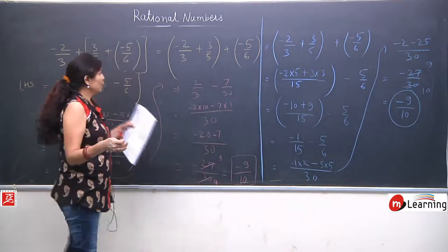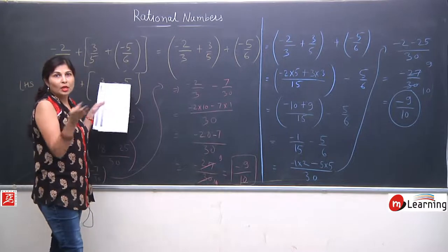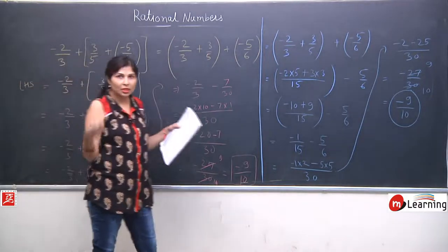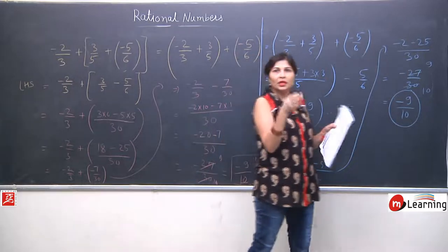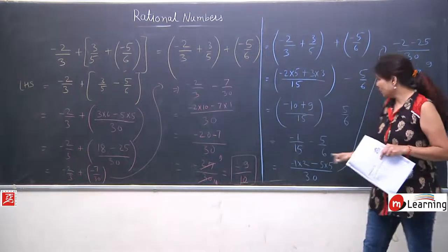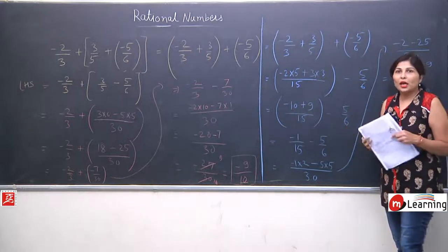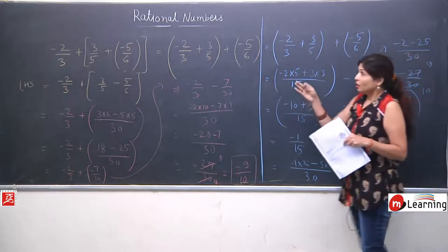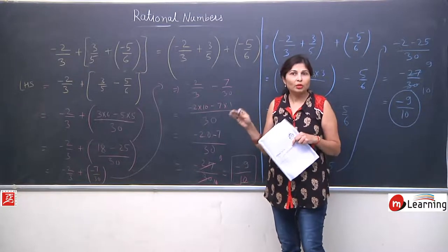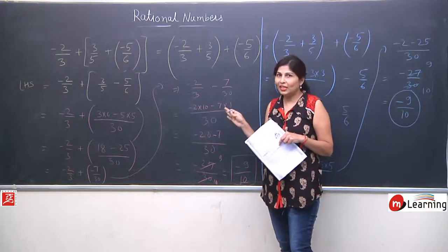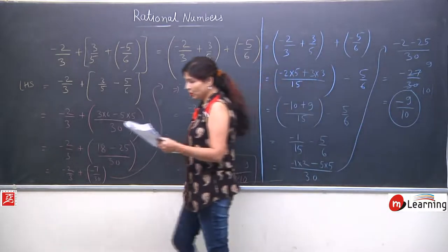Dekhiye dhyan se — we had 3 fractions, 3 rational numbers. Bracket ki position humne change ki, and solving step by step finally we got the same answer. It shows that associative property rational numbers follow karta hai — applicable hoti hai — associative property for addition. Yeh associative property ka revision tha.